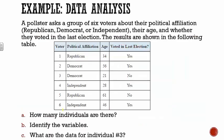Here's an example: a pollster asks a group of six voters about their political affiliation — Republican, Democrat, or Independent — their age, and whether they voted in the last election. How many individuals are there? Six voters. The variables are political affiliation, age, and whether they voted in the last election. For individual three, looking at the table: this person is a Democrat, age 21, who did not vote in the last election.